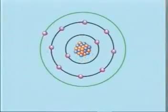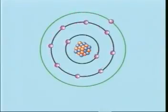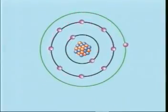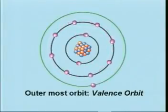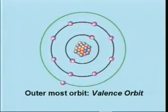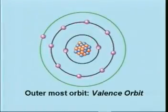Although atoms may contain multiple orbits or shells, it is the electrons located in the outermost orbit that are important in the study of electricity. This outermost orbit of an atom is known as the valence orbit. Any electrons located in this outermost shell are called valence electrons.